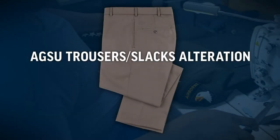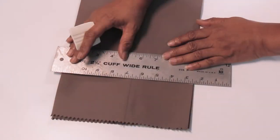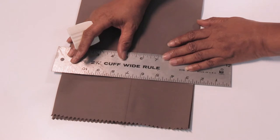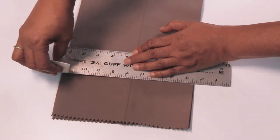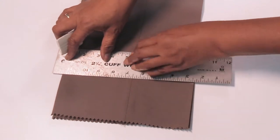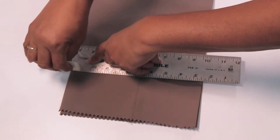Trousers slacks. Note, it is recommended to use a metal ruler that is 12 inches long by 2 1/2 inches in width for easy marking in tailors chalk.